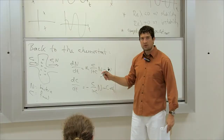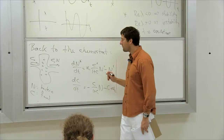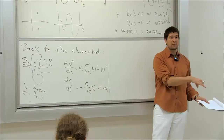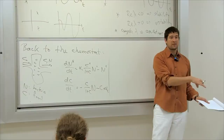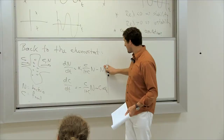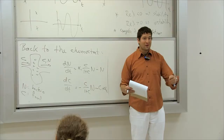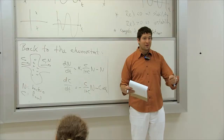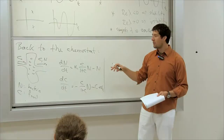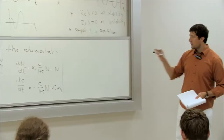We non-dimensionalized the system to get a simpler form. The equations are: dN/dt = α₁·C/(1+C)·N − N, and dC/dt = −α₁·C/(1+C)·N − C + α₂, with only two parameters. The terms represent bacteria flushing out, food flushing out, food coming in, and bacteria growing while consuming food. The non-dimensionalized variables officially carry asterisks, but we dropped them. This will matter later when we refer to old and new variables simultaneously.